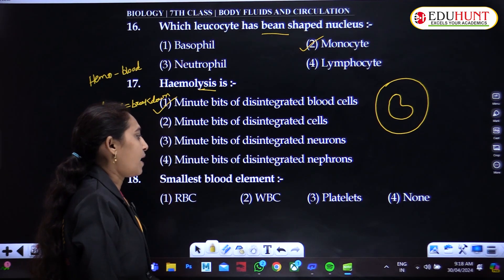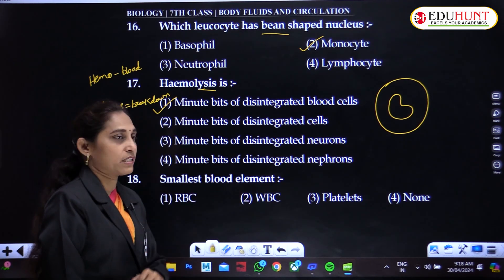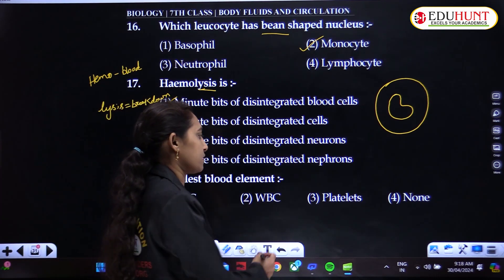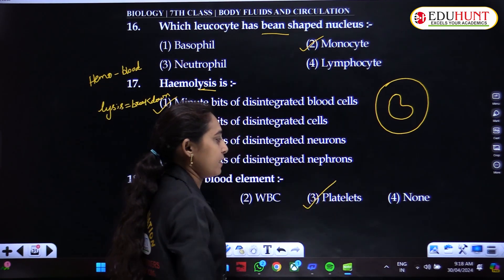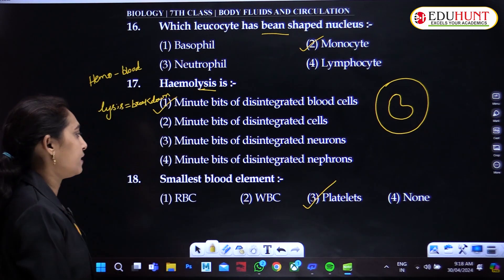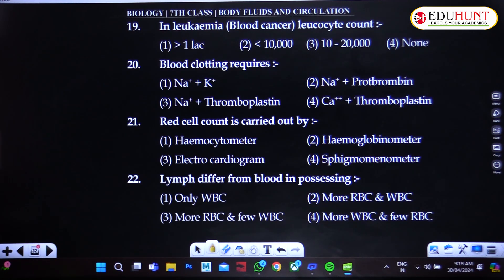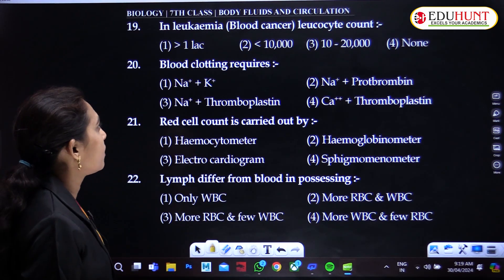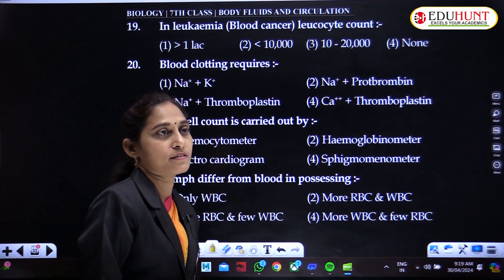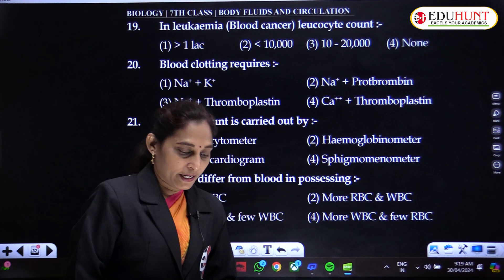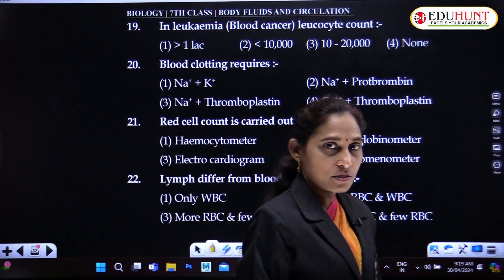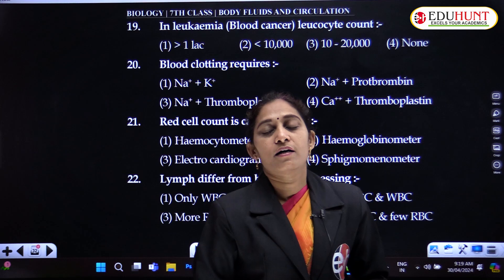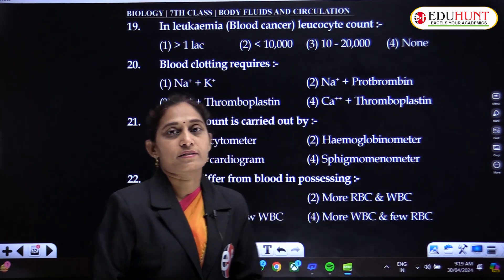Smallest blood element — among RBC, WBC, and platelets, platelets are the smallest blood element. In leukemia, that is blood cancer, the leukocyte count is abnormally increased — leukemia is caused because of an abnormal increase in the number of leukocytes.